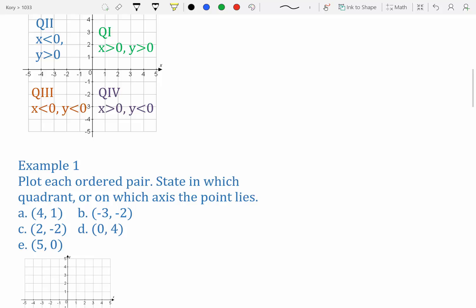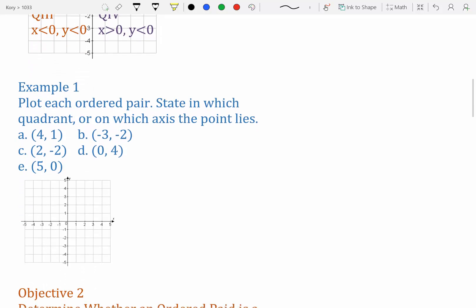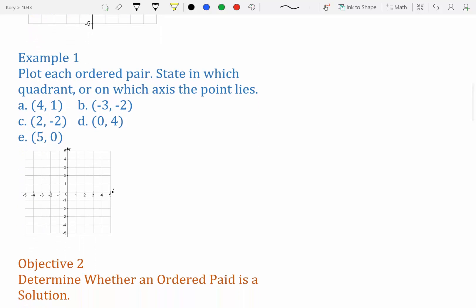Now for our first example, we're going to plot each ordered pair and state what quadrant or which axis the point lies on. So first, let's plot 4, 1.